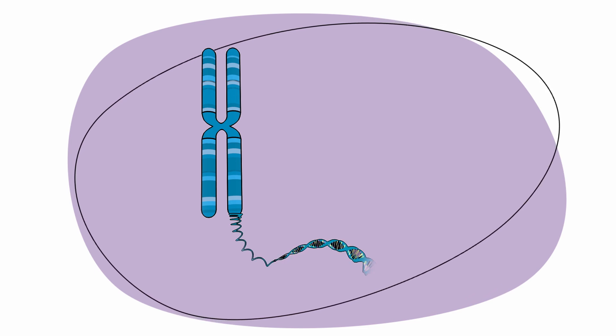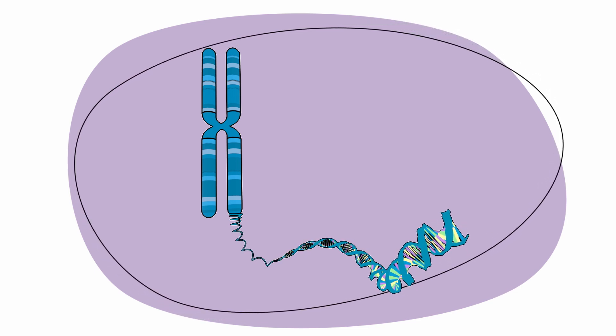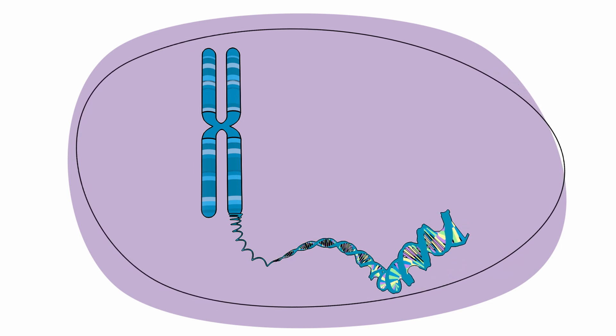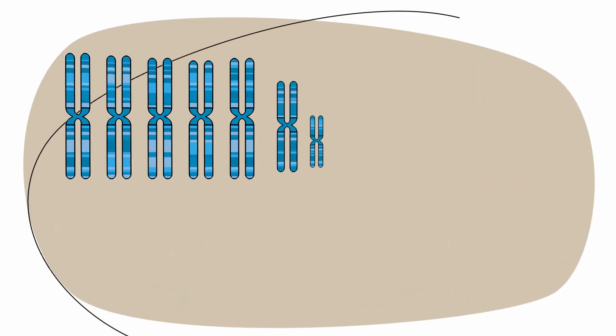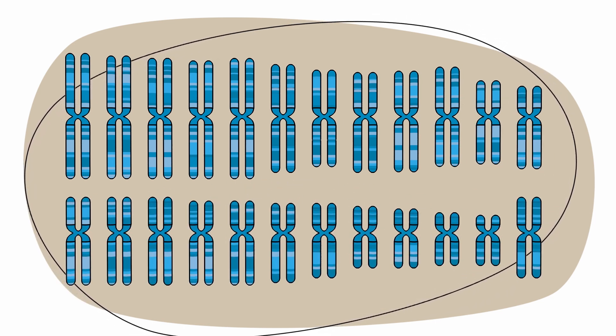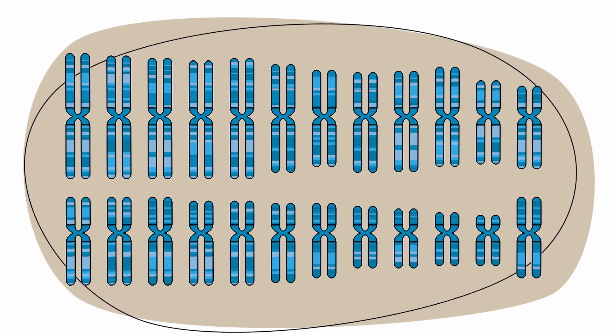DNA is organized into tightly coiled thread-like bundles called chromosomes that contain thousands of genes. We have 23 pairs of chromosomes, each different in their length, shape, and the number and type of genes they carry.